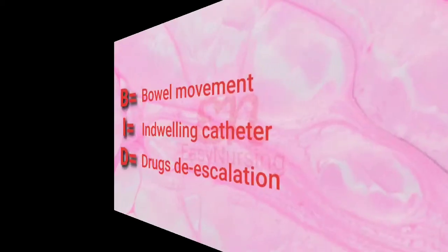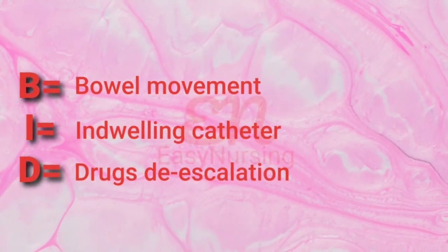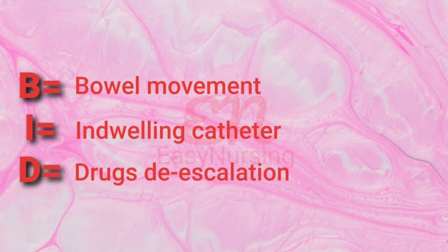B denotes bowel movement. I is indwelling catheter, which includes central venous catheter, Foley's catheter, cannula, and other devices present inside the body of the patient. D is drug de-escalation.